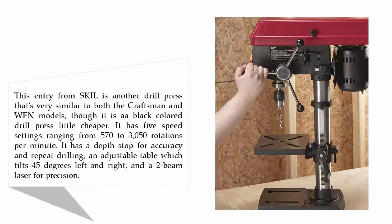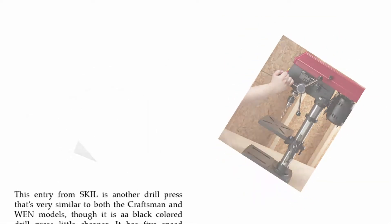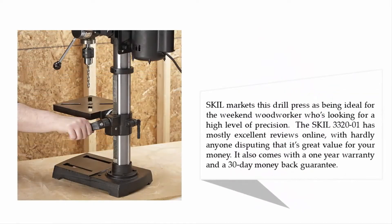This entry from Skil is another drill press that's very similar to both the Craftsman and WEN models, though it is a black colored drill press and a little cheaper. It has five speed settings ranging from 570 to 3050 rotations per minute. It has a depth stop for accuracy and repeat drilling, an adjustable table which tilts 45 degrees left and right, and a two-beam laser for precision.